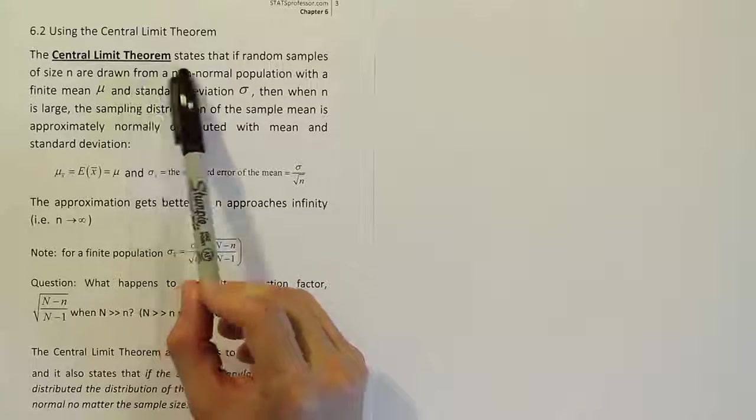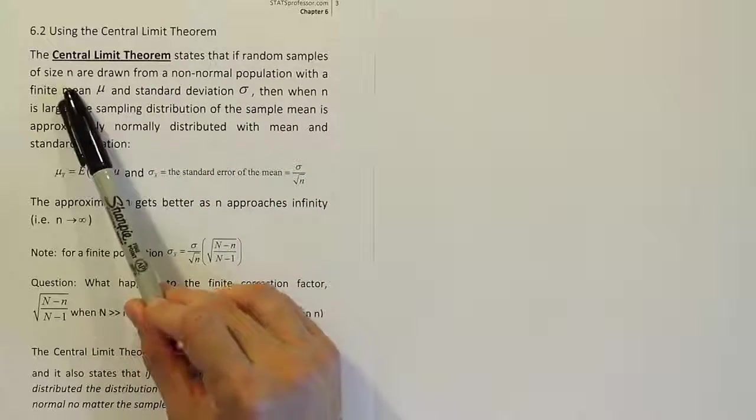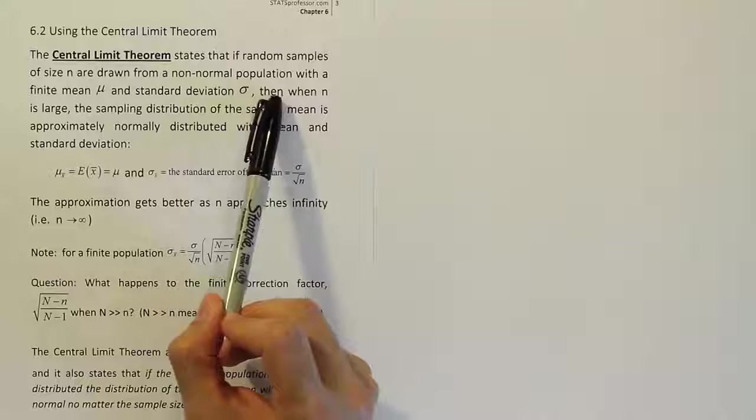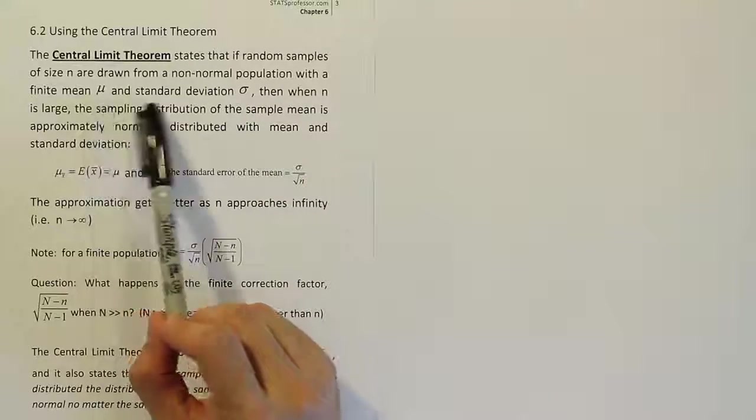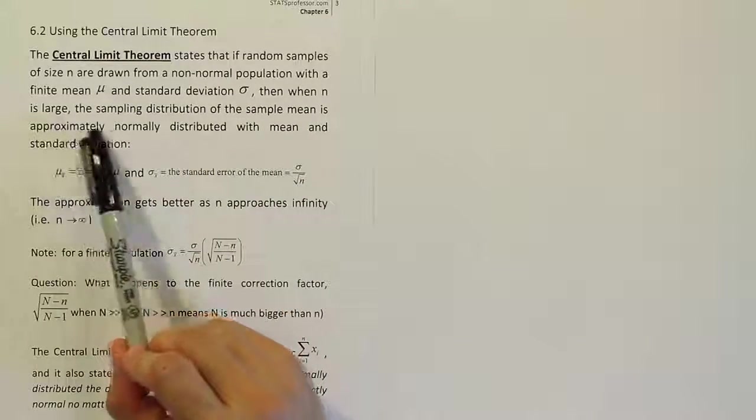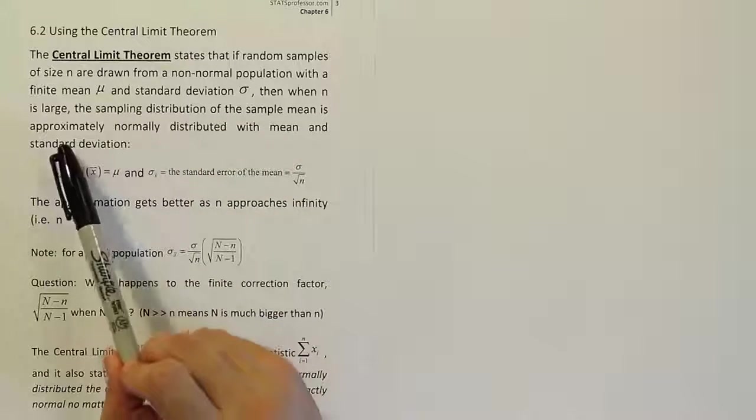The Central Limit Theorem states that if random samples of size n are drawn from a non-normal population with a finite mean μ and standard deviation σ, then when n is large, the sampling distribution of the sample means is approximately normally distributed with the mean and standard deviation given by these expressions.